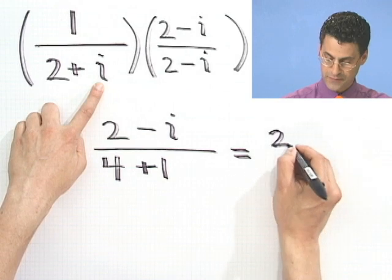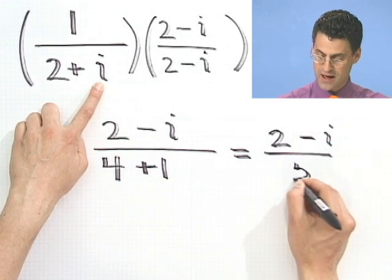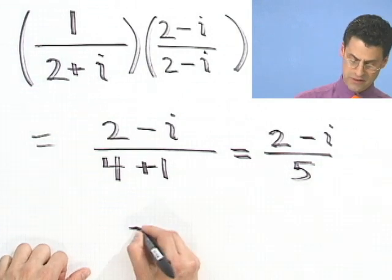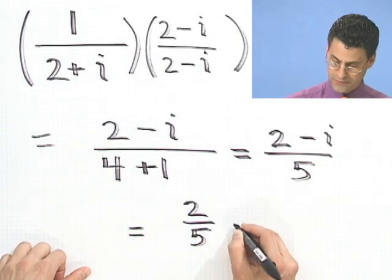So we see 2 minus i divided by 5. That's fine, but if you want to be careful with the real part, you can break that up into two fractions.